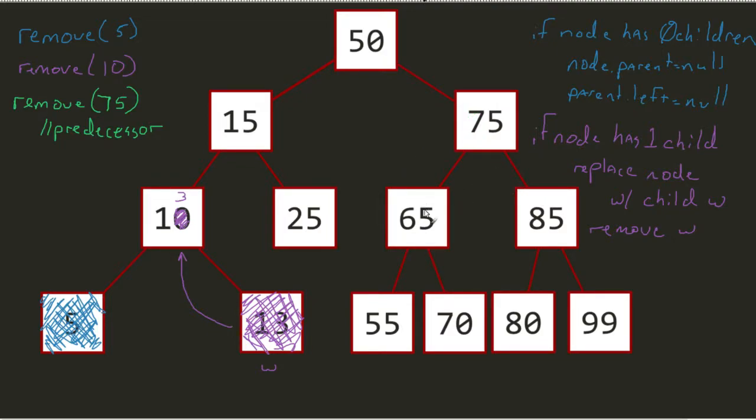If I wanted to go with the predecessor removal process, I would want to find my greatest lesser. That's the node that I would make the replacement with. So I have a 75. 65 is not my greatest lesser. It would actually be the 70, and so I would make that replacement.